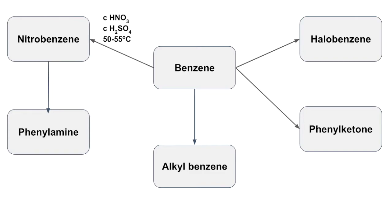Next, we'll look at nitrobenzene to phenylamine. That's where the NO2 group on the benzene is reduced to an NH2 group. To do that, you use a reducing agent made from tin and concentrated hydrochloric acid, done under reflux. Sodium hydroxide is used to remove any excess acid.